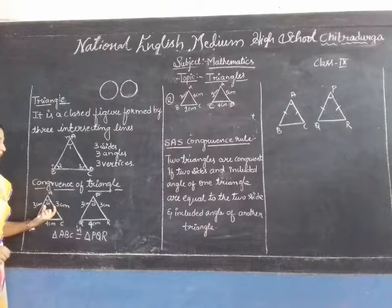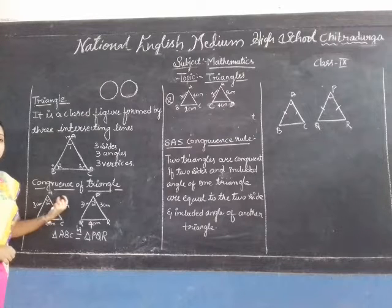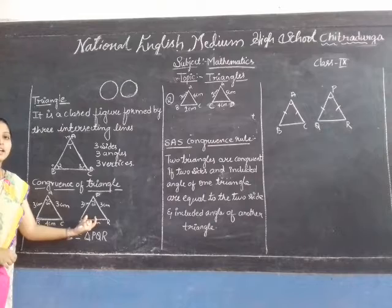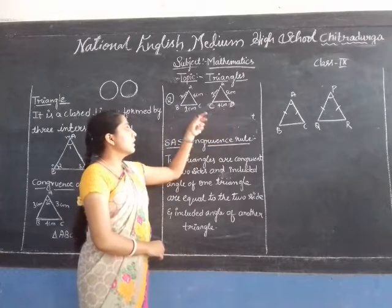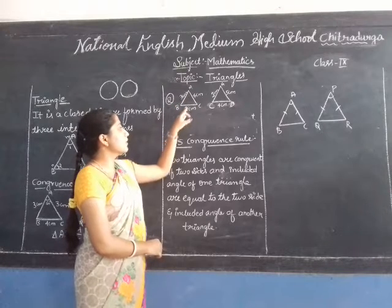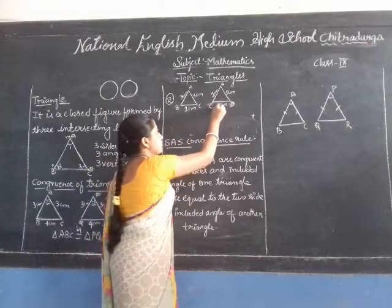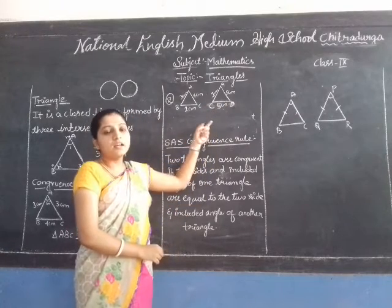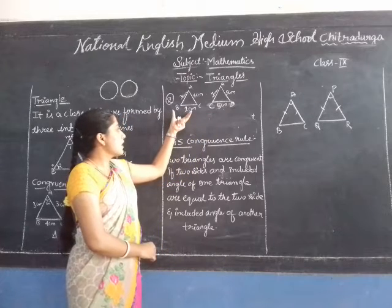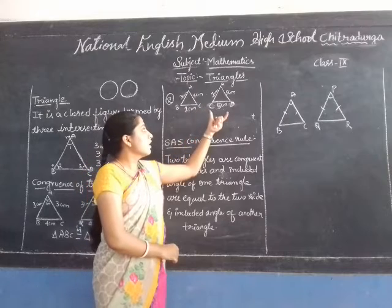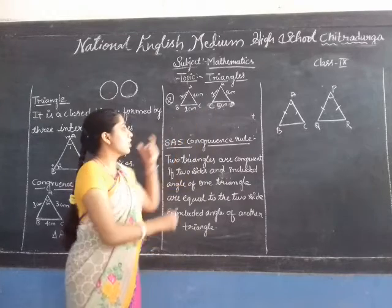Two triangles are congruent only when three sides and the included angle of one triangle are equal to the corresponding sides and angle of another triangle. Now consider triangle ABC with sides 3 cm, 4 cm, and 1 cm, and triangle ACD with sides 1 cm, 5 cm, and 5 cm. These two triangles are NOT congruent to one another because the three sides of triangle ABC are not equal to the corresponding sides of triangle ACD.